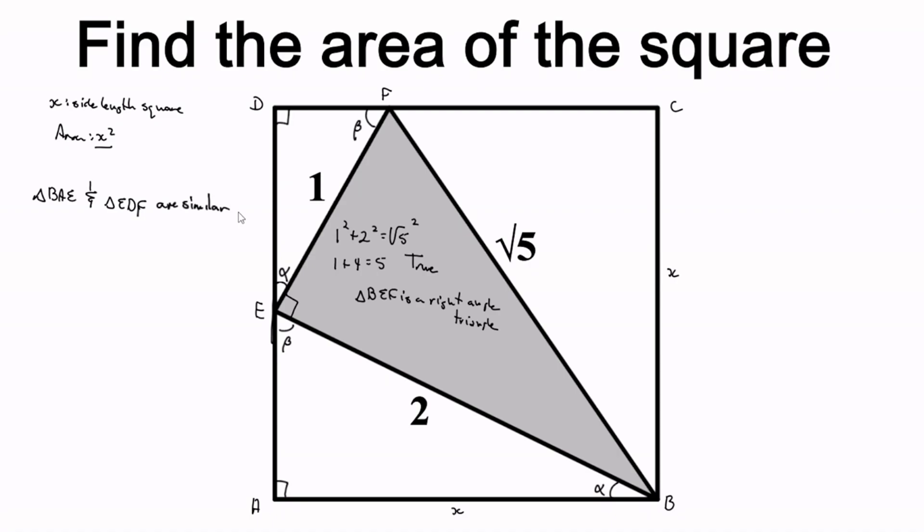So now that we've shown that they're similar, we can find their ratio of similarity, since we have the hypotenuse of triangle BAE and triangle EDF. So here we call the ratio of similarity K. I'll put the big on the small. So 2 on 1, the ratio of similarity equals to 2. So that means that the side lengths of triangle EDF would be half that of triangle BAE.